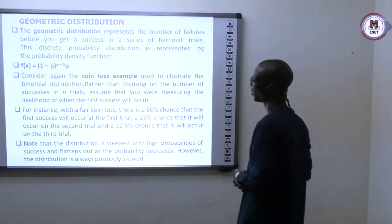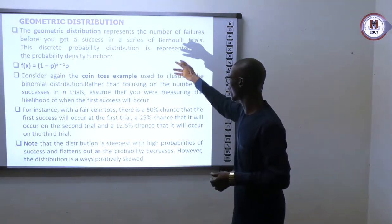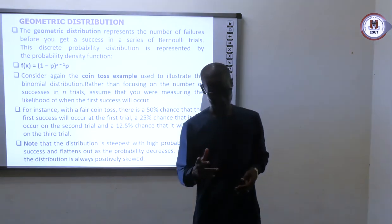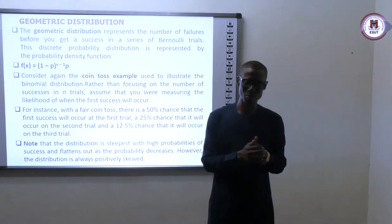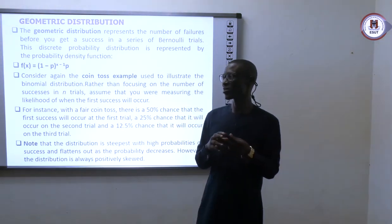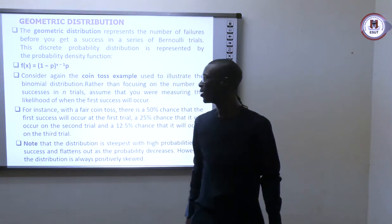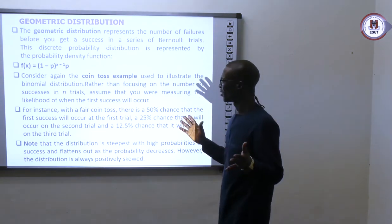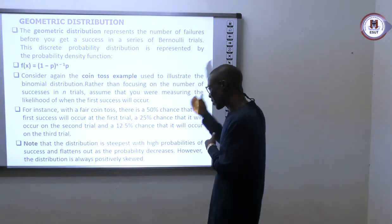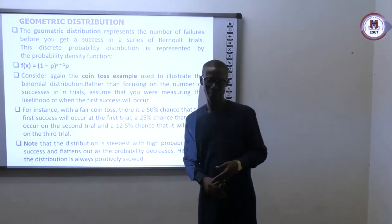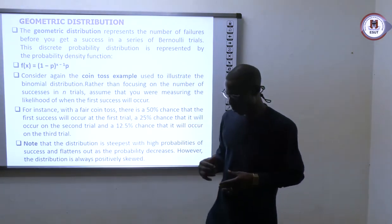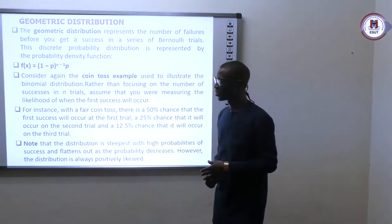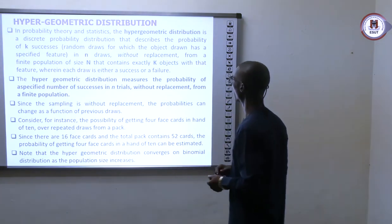Let us talk about geometric distribution. Geometric distribution represents the number of failures before you get one success. Remember the difference between these three distributions: binomial looks at two outcomes and the chances of having two outcomes in a trial; Poisson looks at the chances of having this outcome within a specific time frame; and geometric looks at how many times you will perform this event — how many times you will fail — before you succeed.